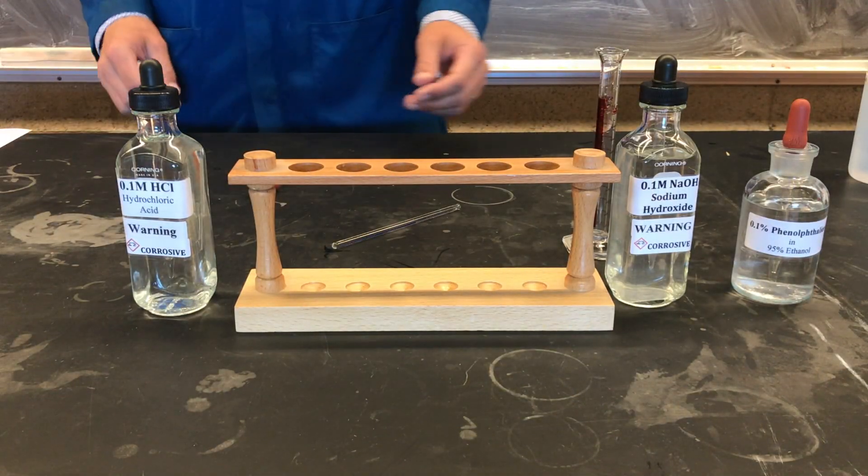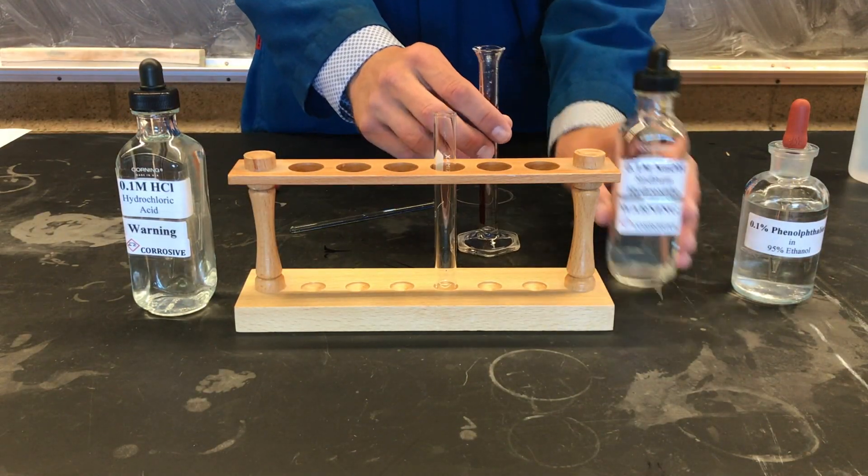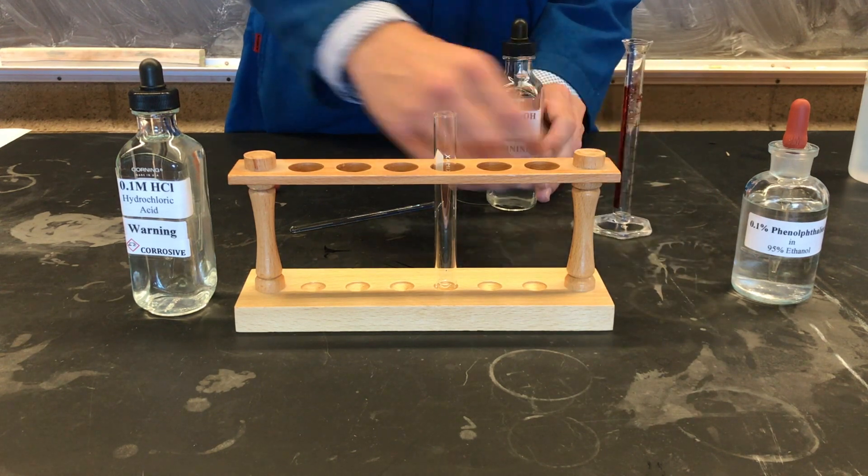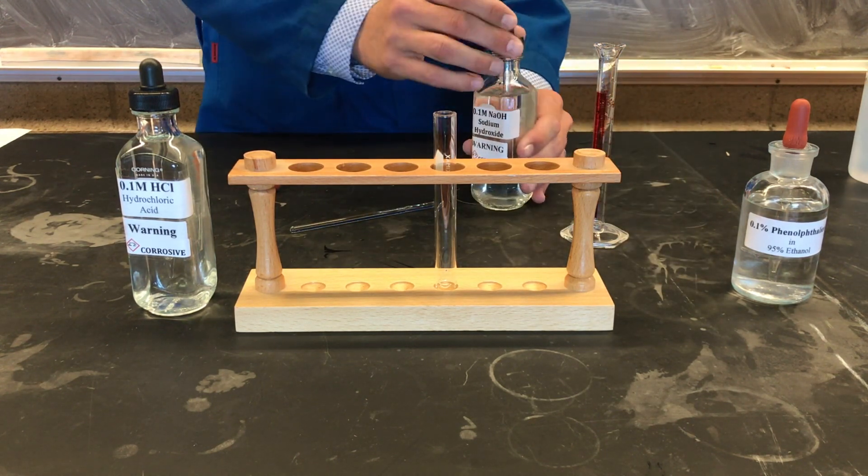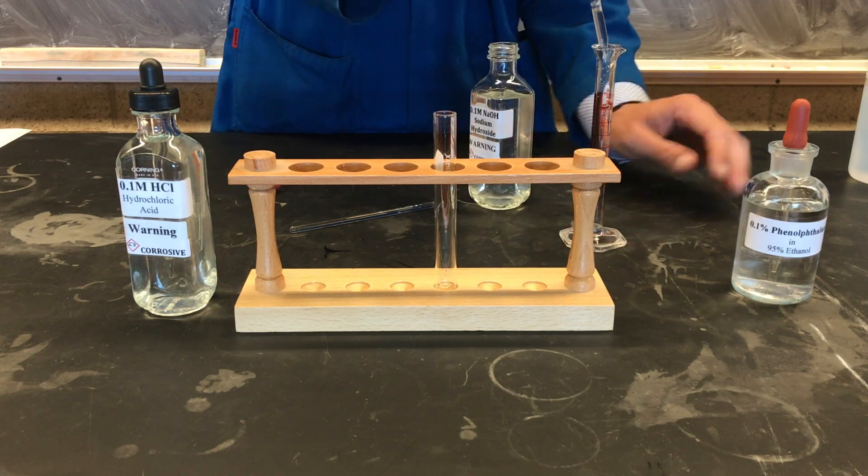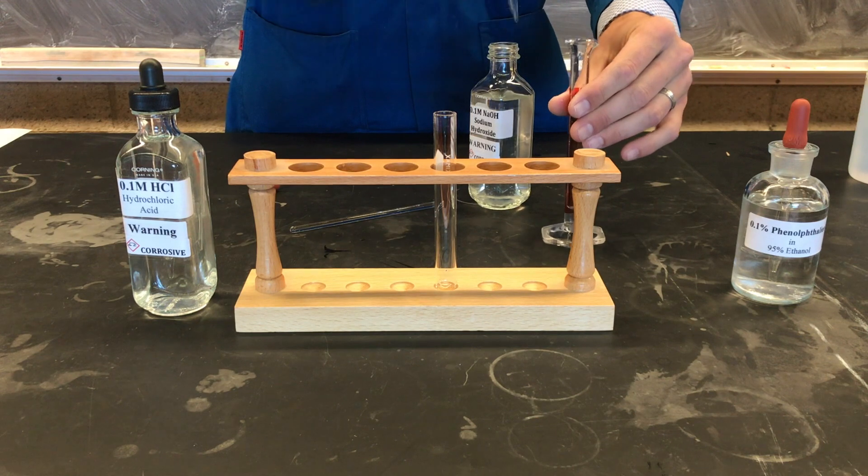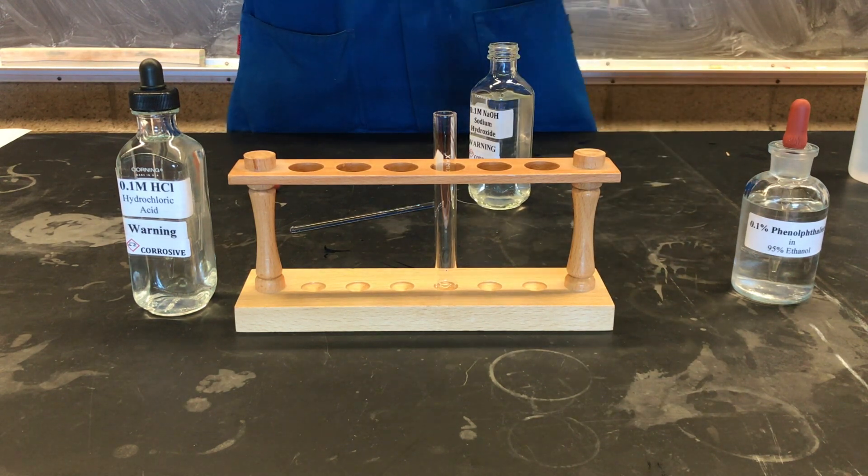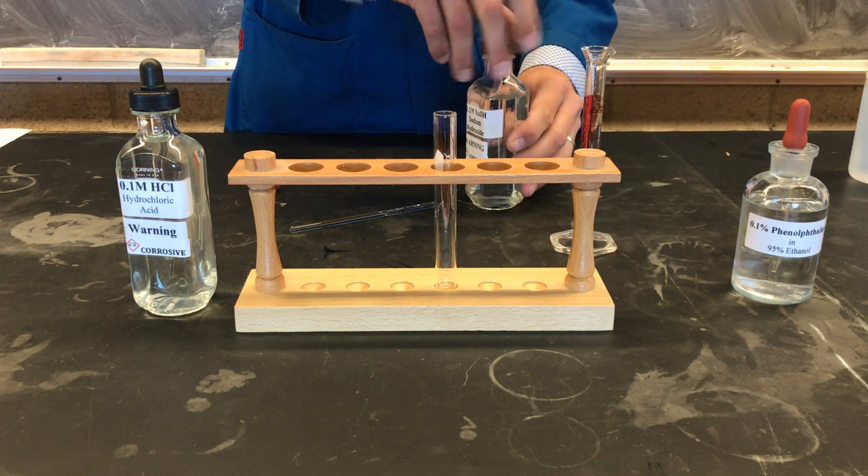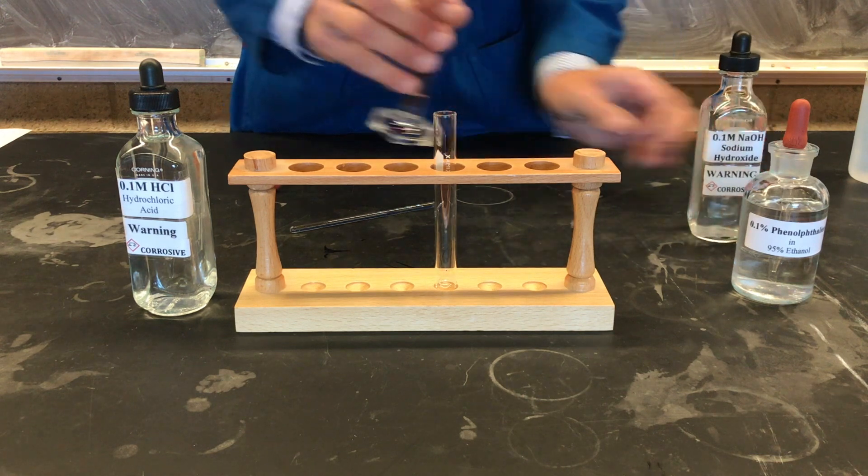In this reaction, we're going to be reacting aqueous hydrochloric acid with aqueous sodium hydroxide. We're going to add about 2 ml of our sodium hydroxide to a 10 ml graduated cylinder and add a bit to our test tube.